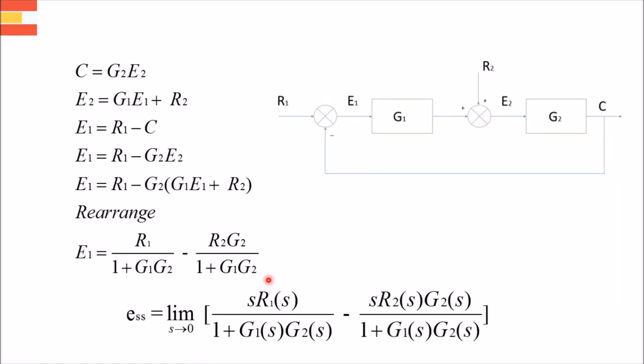Talking about the derivation part. Here you have to just write all the values that is C, E2, E1 in terms of its input. Like C is written as E2 into G2. E2 is written as R2 plus E1 into G1. And E1 is written as R1 minus C because there is a negative feedback here. So first three equations describe that.